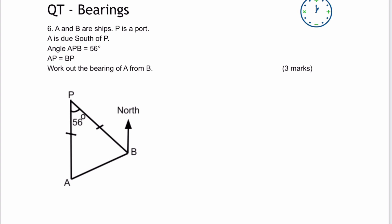So we've got A and B as ships, and P as a port. A is due south of P, and then angle APB is 56 degrees, and AP equals BP.